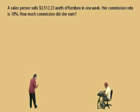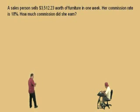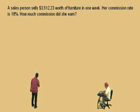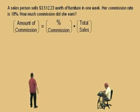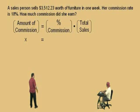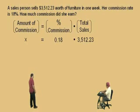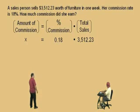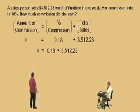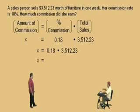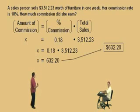A salesperson sells $3,512.23 worth of furniture in one week. That's a lot of furniture! Her commission rate is 18%. How much commission did she earn? Here's our format: the amount of commission is equal to the percent commission times the total sales. Which one are we looking for, Charlie? The amount of commission — how much did she get? So that will be our x. What's our percent commission as a decimal? 0.18. What's our total sales? $3,512.23. So to calculate x, you just multiply 0.18 times $3,512.23, and what do you get? 632.20. So her commission earned was $632.20.